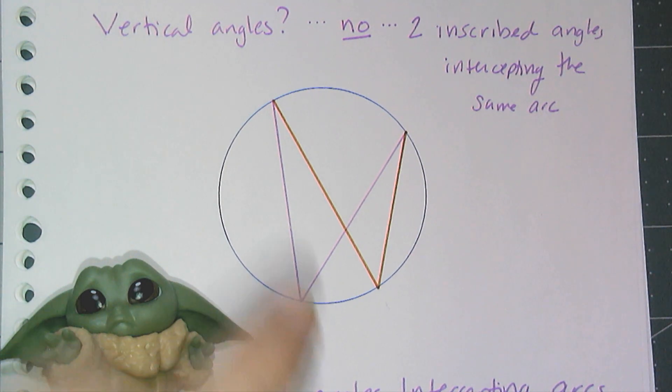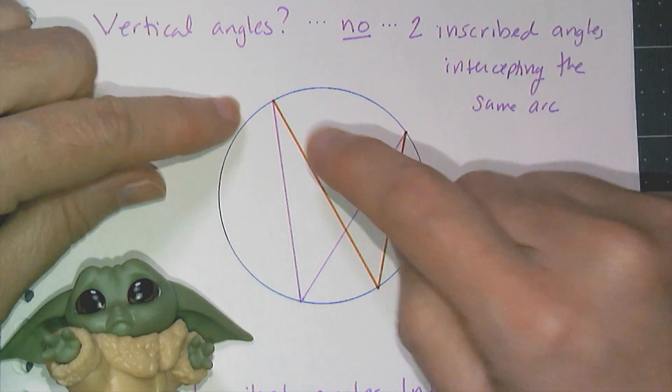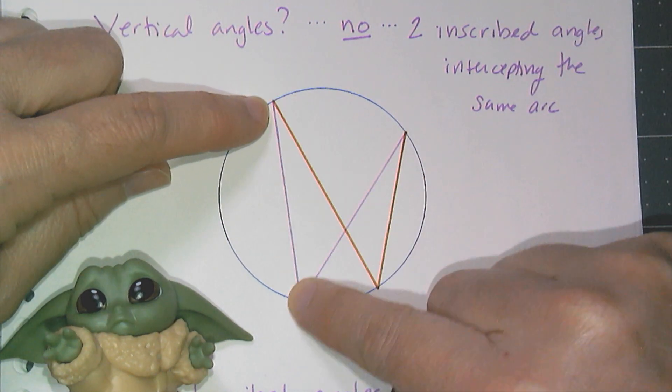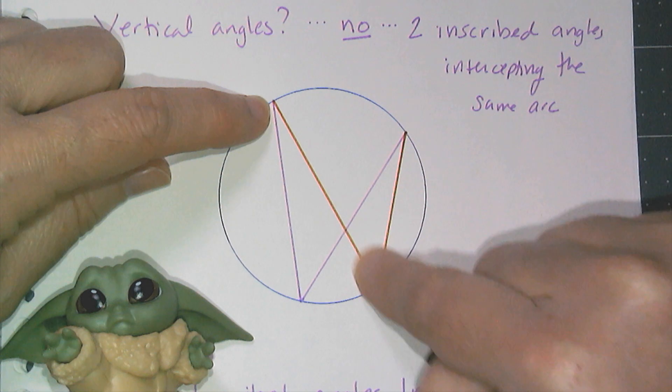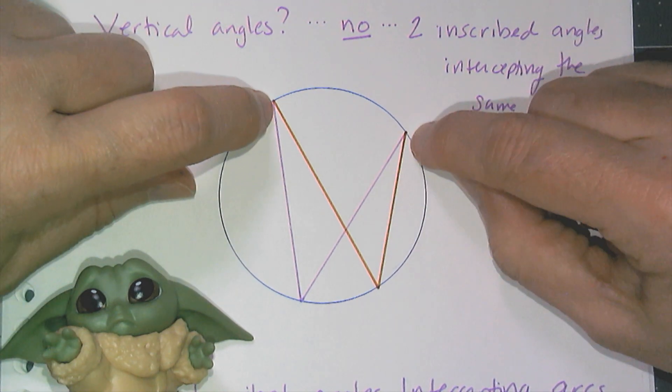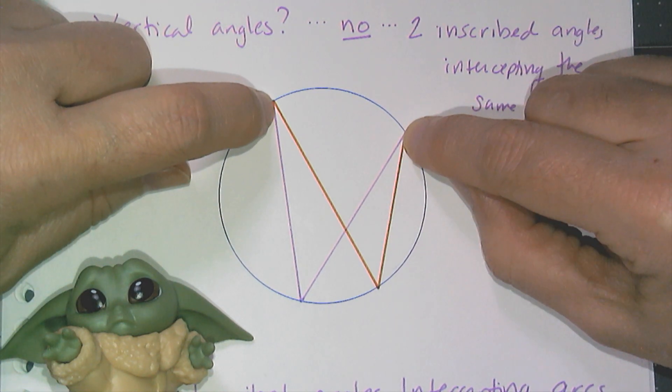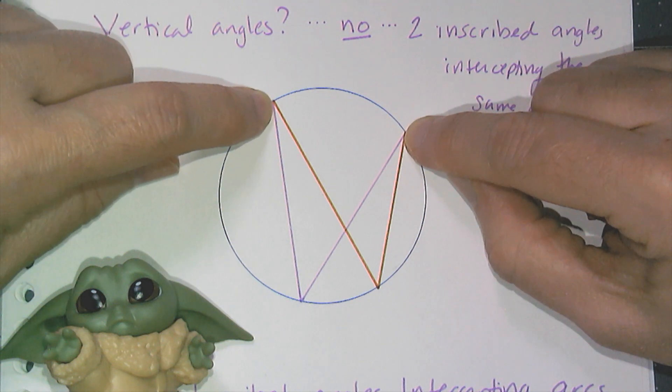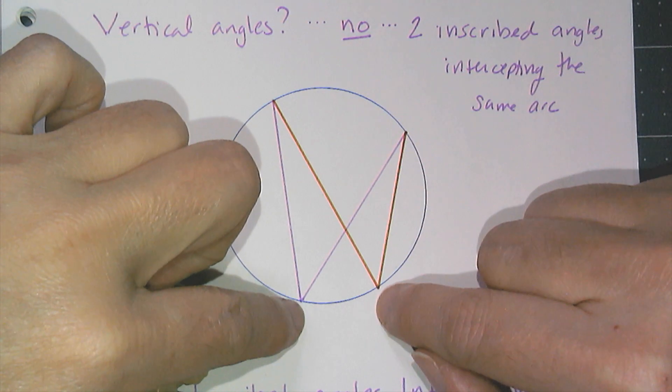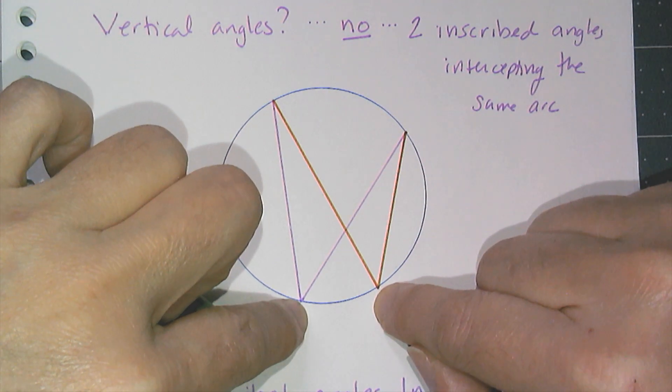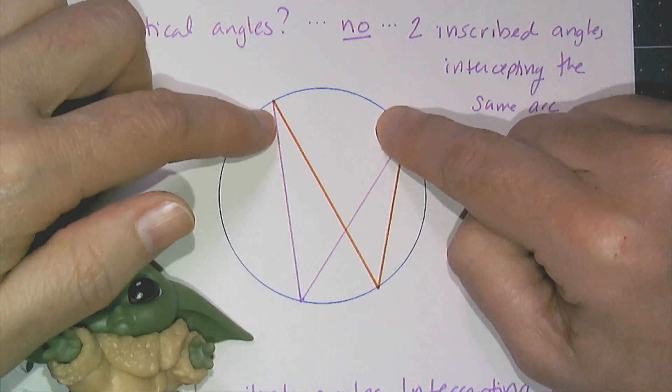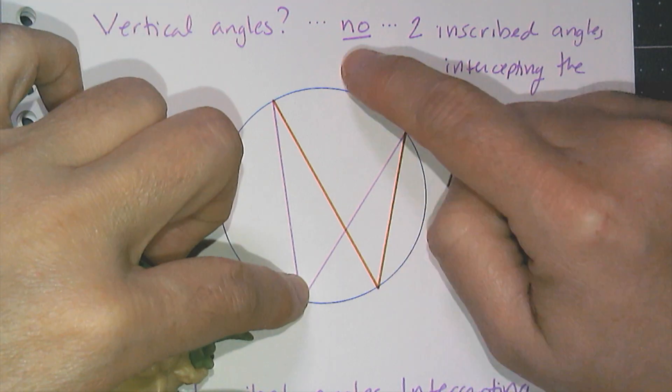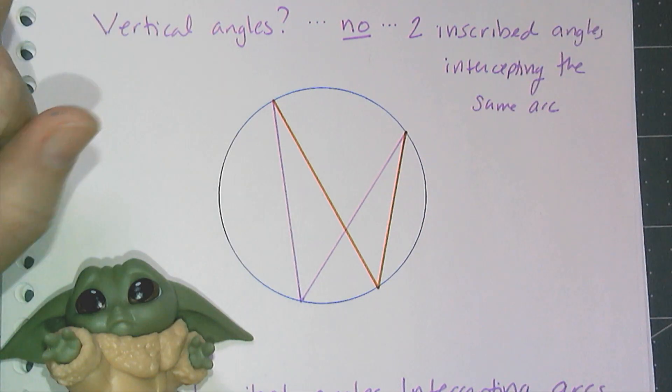It forms two inscribed angles. So I have this angle here, and I have this angle there, both of them are inscribed, and they intercept the exact same arc. That means, by the inscribed angle conjecture, that they have to be congruent, right? Because this measure is the same, and each of those angles has to be half of that arc measure.